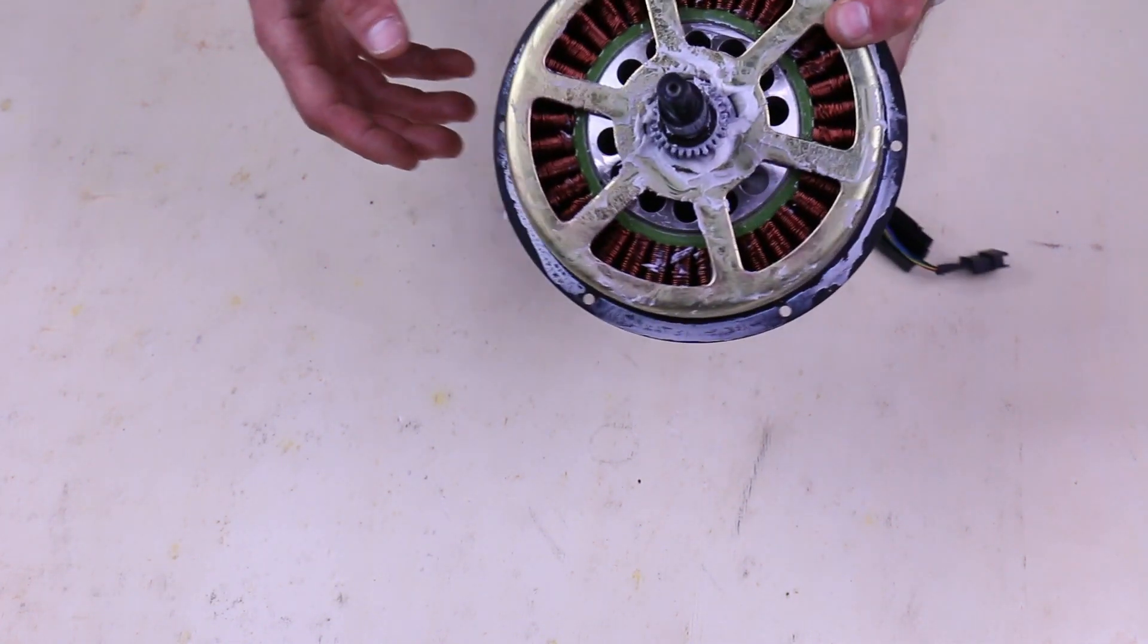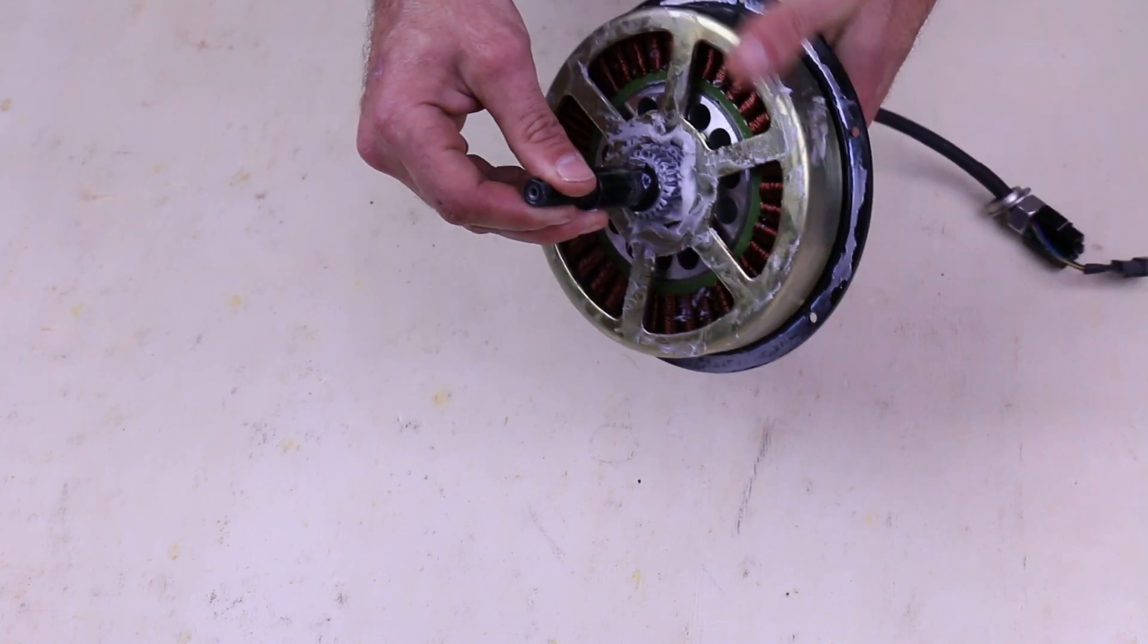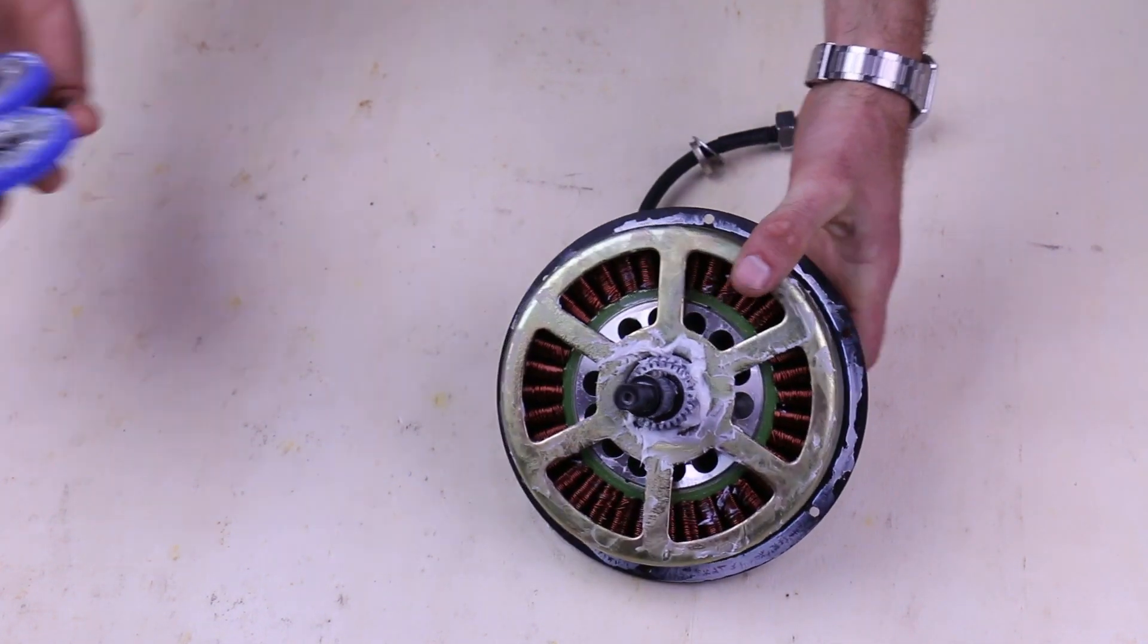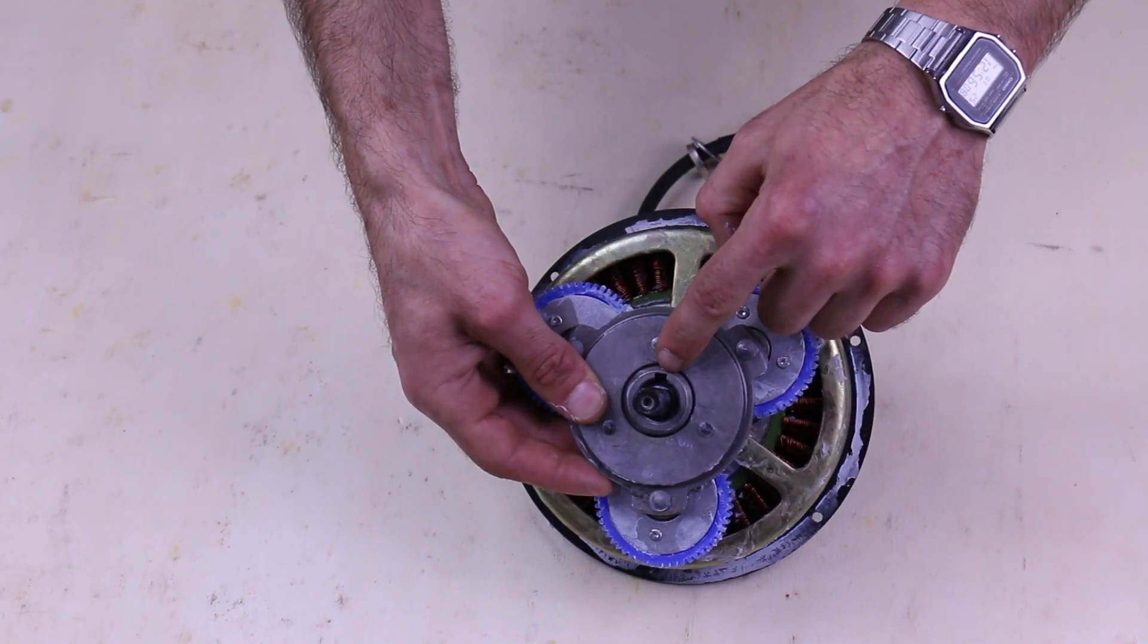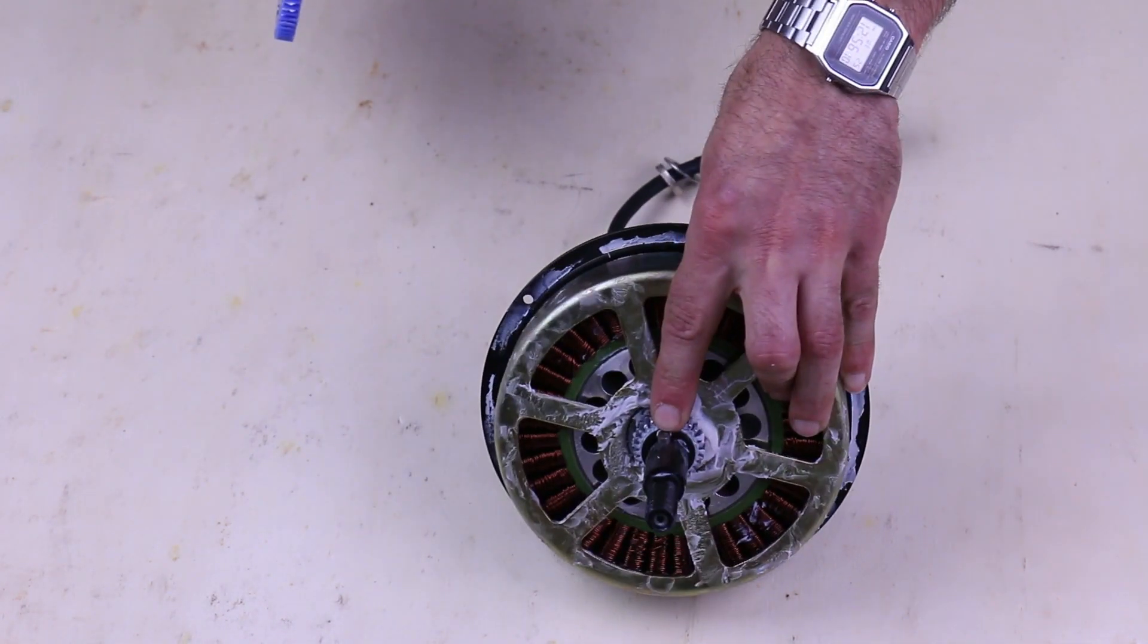So to reassemble the motor, you simply just reverse the disassembly process. We'll slide the freewheel assembly back on, making sure to align the keyway with the key on the motor.